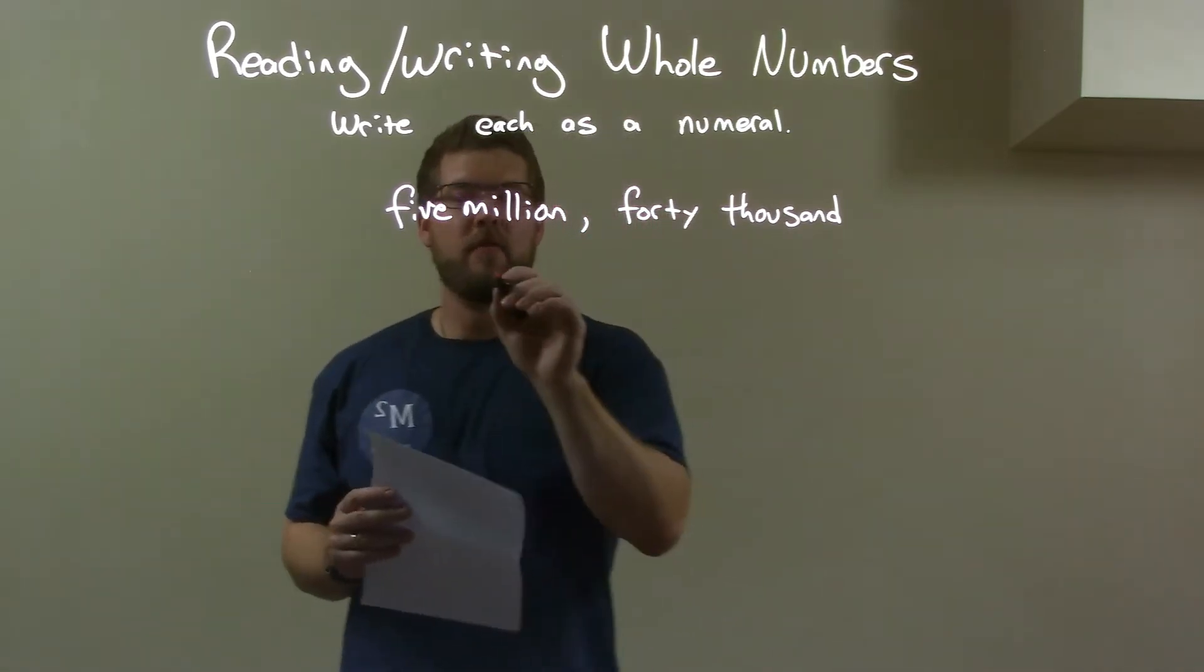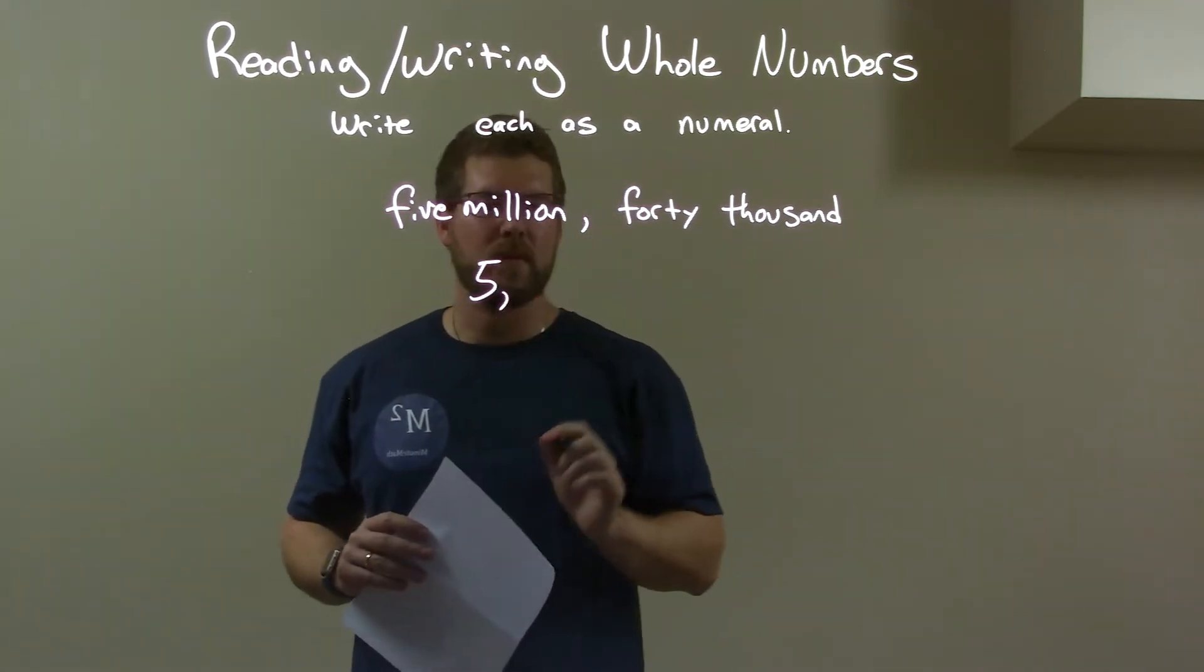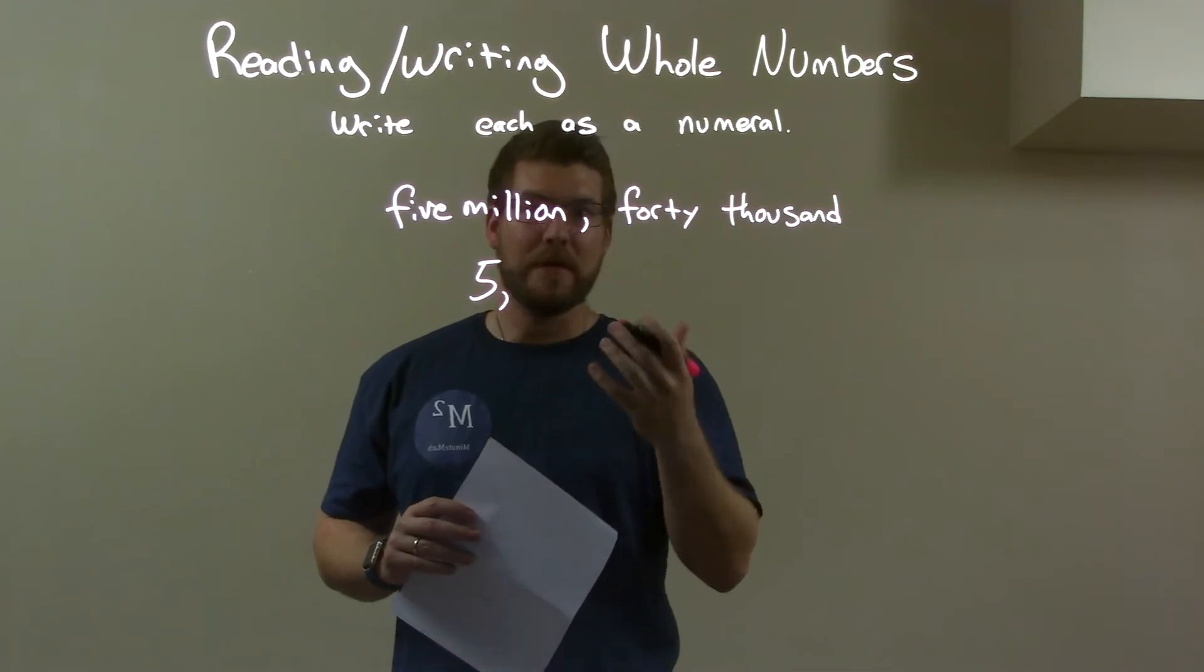So the first thing here, we have the 5 for the 5 million. Five million. So the million, I will have two sets of three zeros.